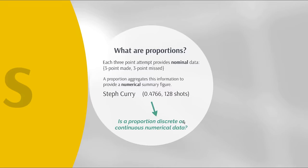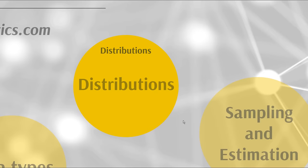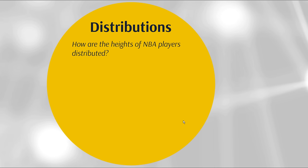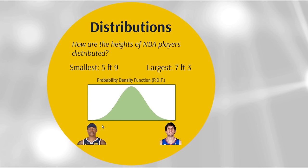That covers data types. Now let's look at distributions. If I was to ask how the heights of NBA players are distributed — the smallest player in the 2018-19 season is Isaiah Thomas at 5'9", and the largest is Boban Marjanovic at 7'3". All other players fit somewhere between those extremes.